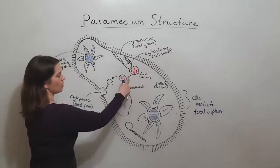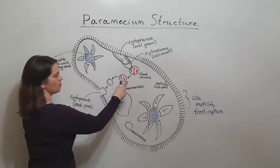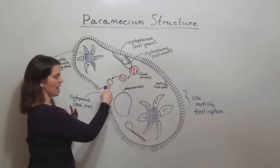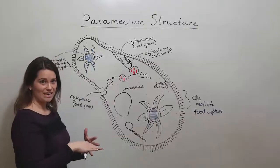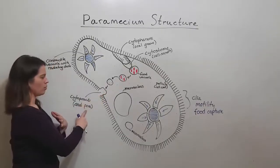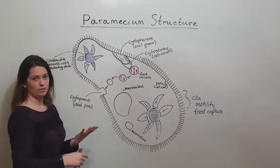Then the food vacuole will move through the cell, digest the contents, and then eventually any waste products that aren't needed by the cell get expelled through the cytoproct or anal pore through a form of exocytosis.